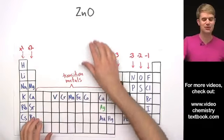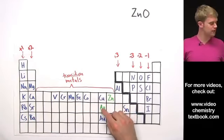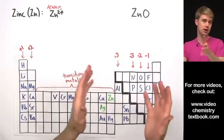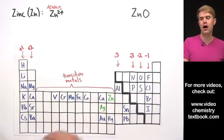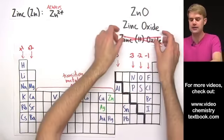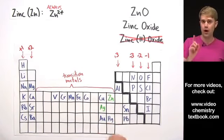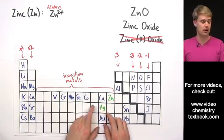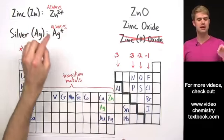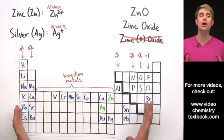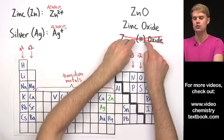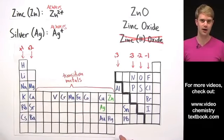ZnO is kind of a trick question, because Zn is one of the few transition metals that can only make one type of ion — it always makes a 2+ ion. Because there's only one possible ion, we don't need to use Roman numerals in parentheses, so we just call this zinc oxide, not zinc(II) oxide. There's one other transition metal that only makes one type of ion: silver, which always makes Ag⁺. So if you're naming a compound that contains zinc or silver, you don't need Roman numerals.